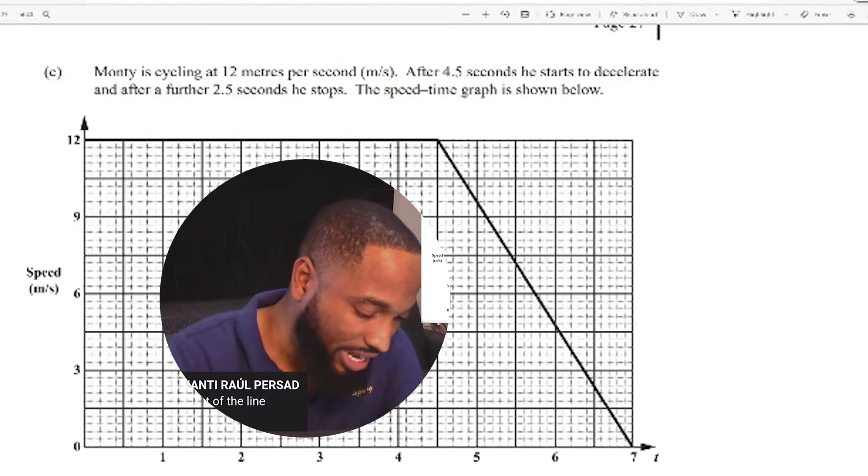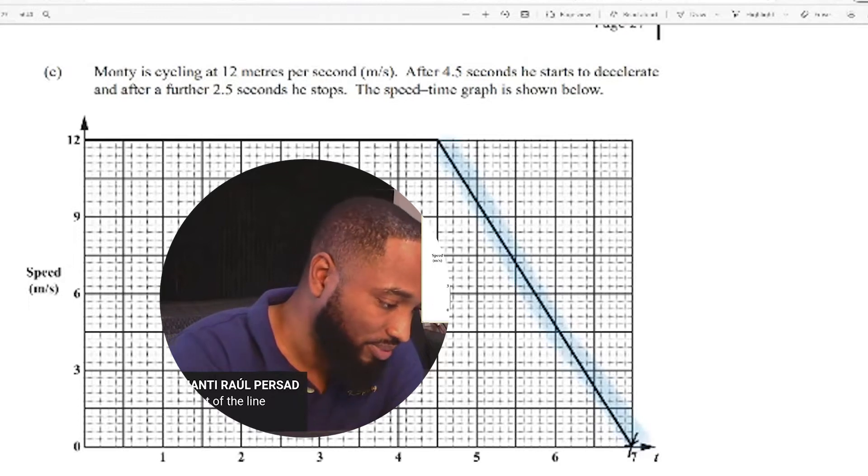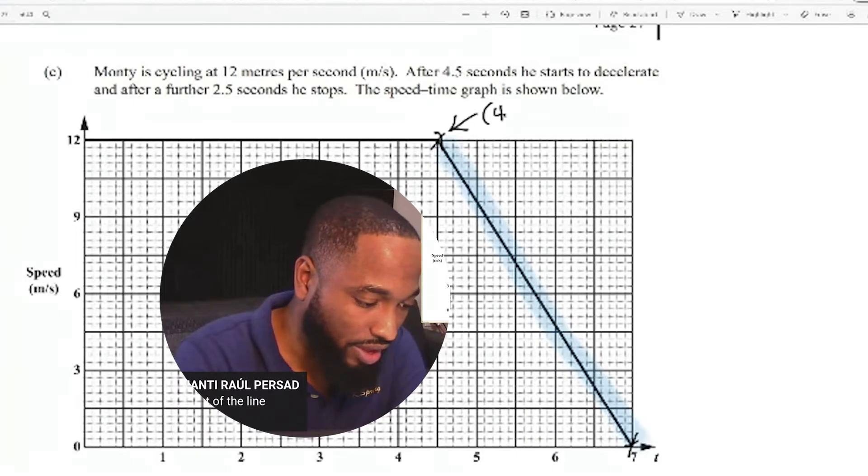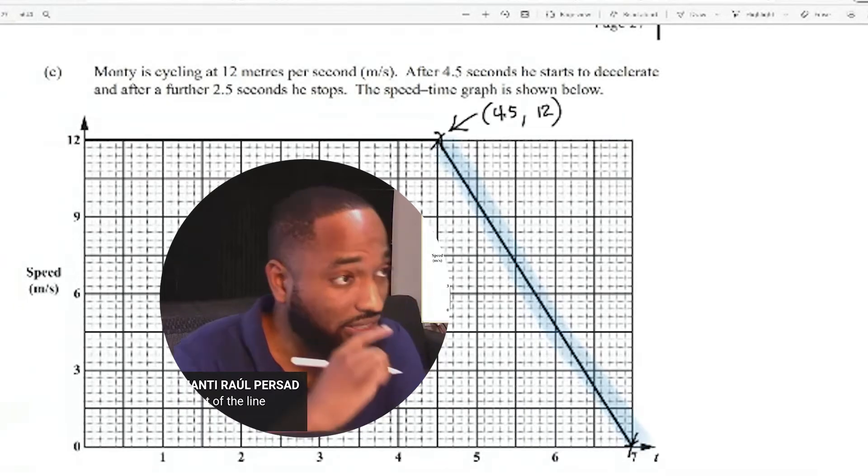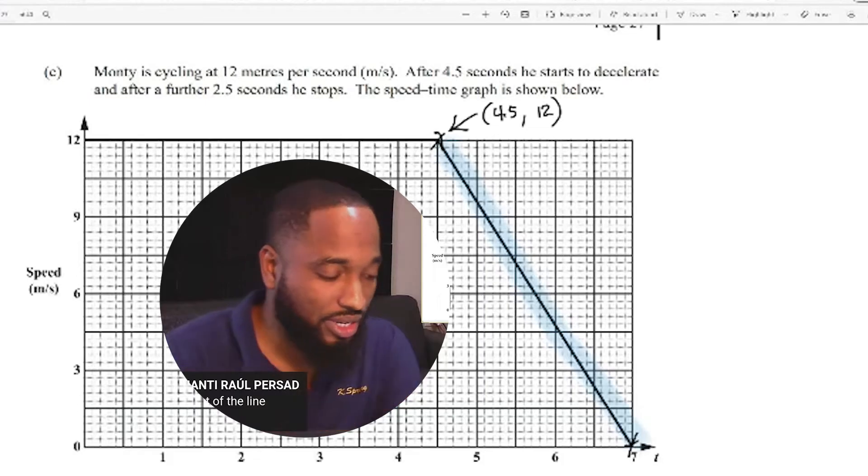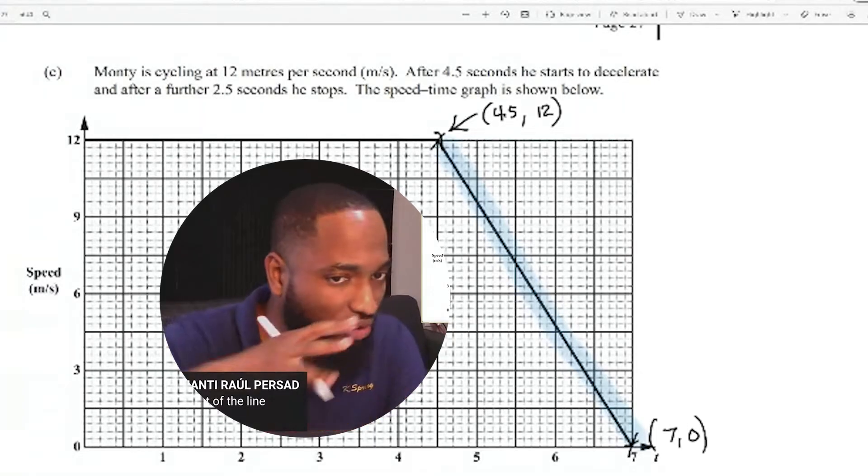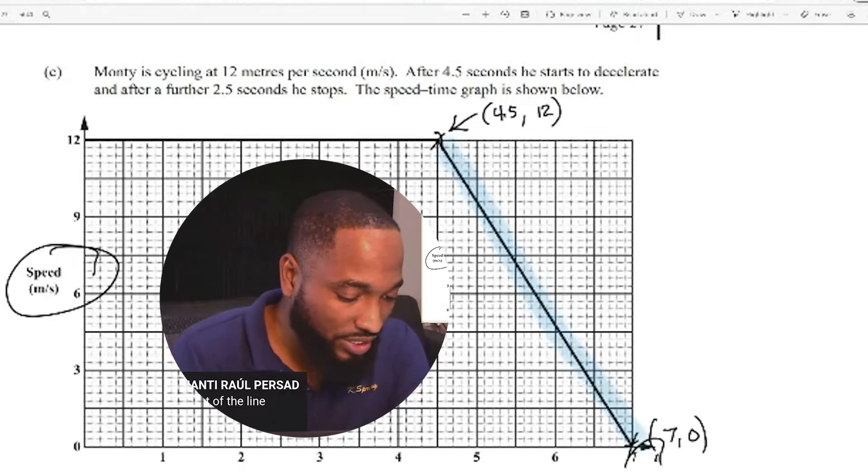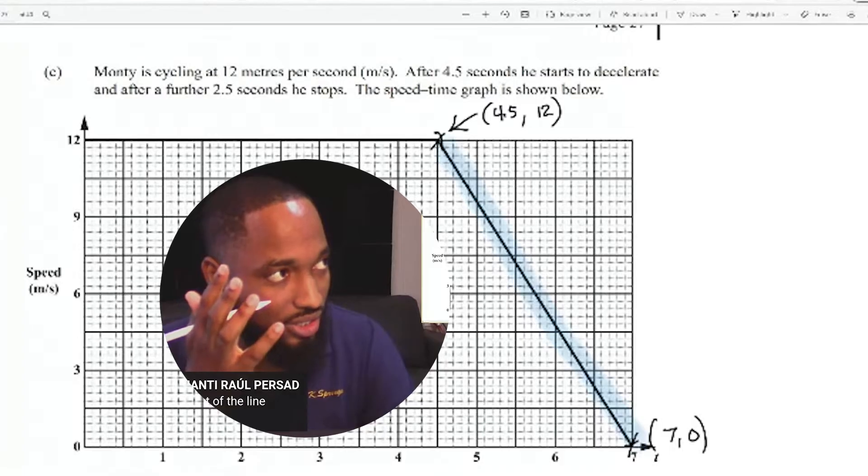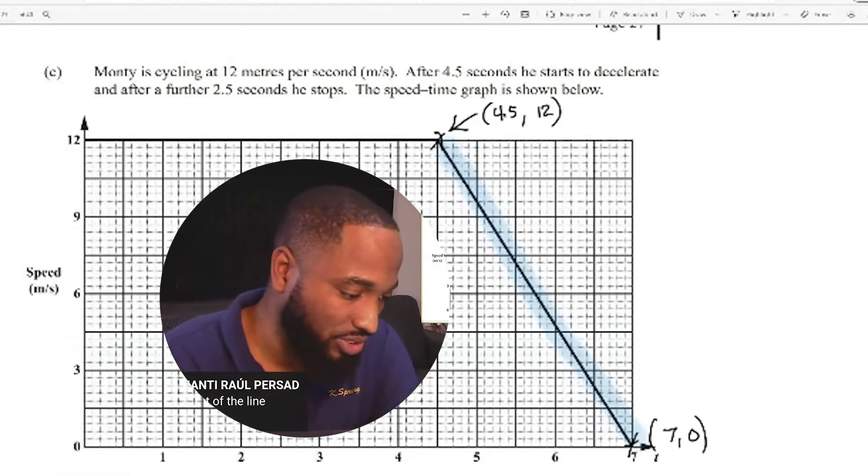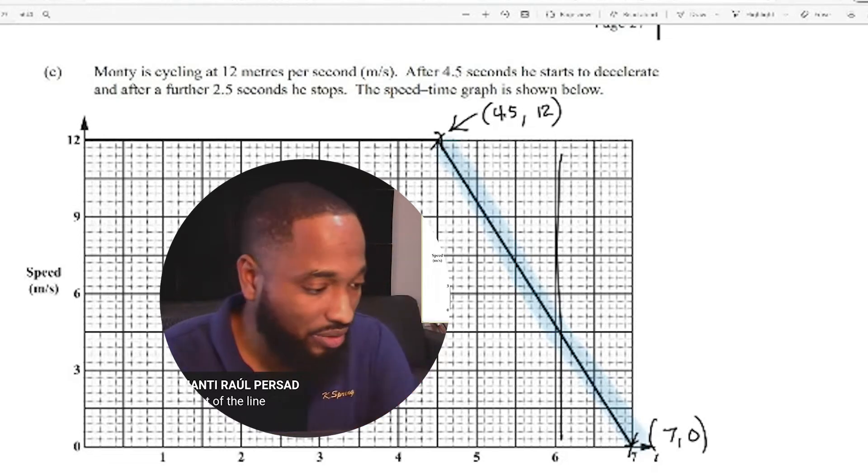So we can use two points on the line. And the best two points I'm seeing are this one and this one up there. What's the value of this point? It's 4.5 and 12. That's the coordinates of the points. And the coordinates of this is 7, 0. So what this gradient is going to do is make us put a speed over time. And those of you in physics know velocity over time is acceleration. Change in velocity over time is acceleration.